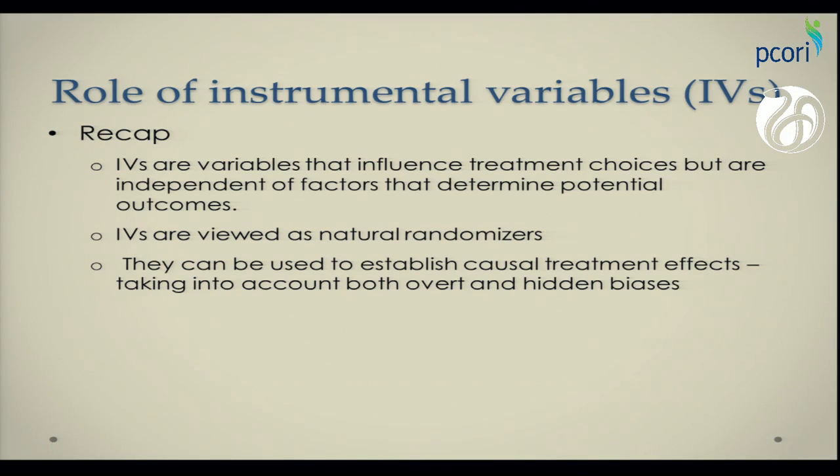As a recap, we all know that instrumental variables are variables that influence treatment choices but are independent of factors that determine potential outcomes. We view IVs as natural randomizers, and there's a lot of discussion of where and how we find IVs. But my talk will be mostly focused on if you find an IV, how do we implement it, how do we use it, and how do we interpret the results coming out of an IV, especially when there is treatment effect heterogeneity.